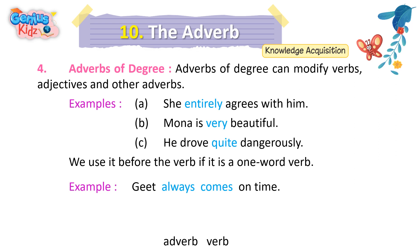We use it before the verb if it is a one-word verb. Example: Geet always comes on time. 'Always' is the adverb; 'comes' is the verb.